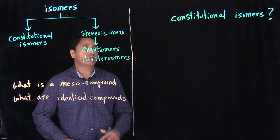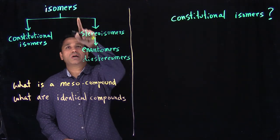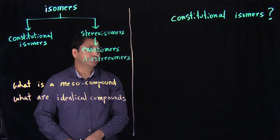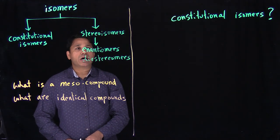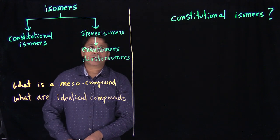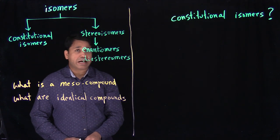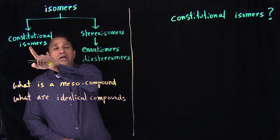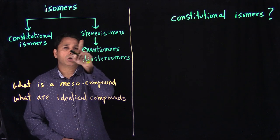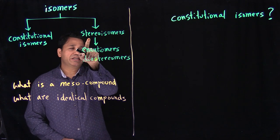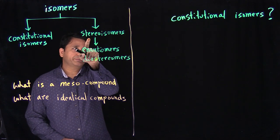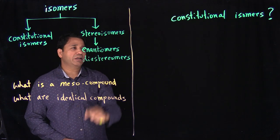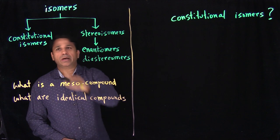In this chapter, we will also learn what the different types of isomers are. Isomers can be divided into two major categories: constitutional isomers or stereoisomers. We'll look into each and every one in detail.